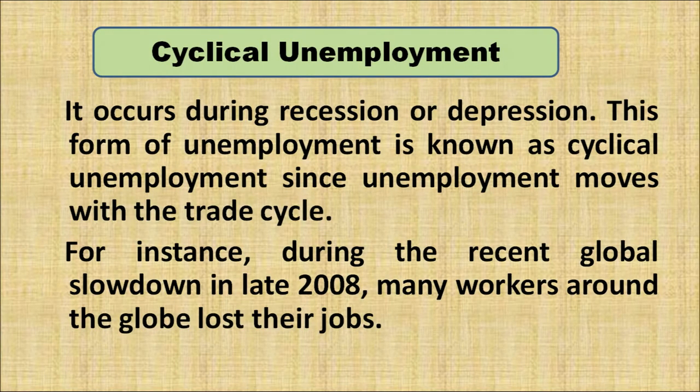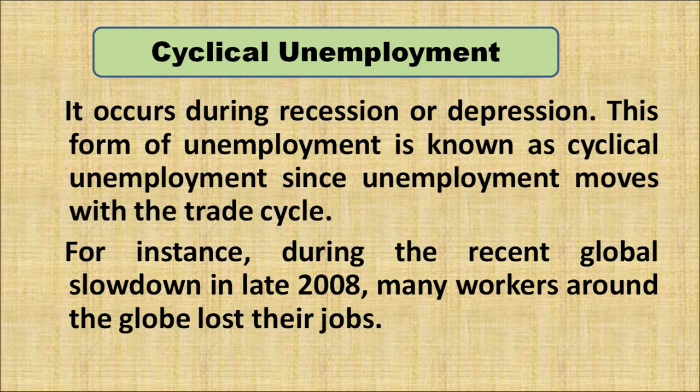Cyclical unemployment occurs during recession or depression. When economic activities are going down and production is declining, it is an example of recession; if it persists for a longer period, it becomes depression. Employment opportunities fall and unemployment becomes a major problem. This form of unemployment moves with the trade cycle. For instance, during the recent global slowdown of the 2008 financial crisis, many workers around the globe lost their jobs — that unemployment is cyclical because it moved with the business trade cycle.